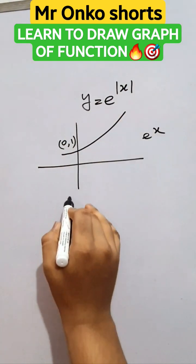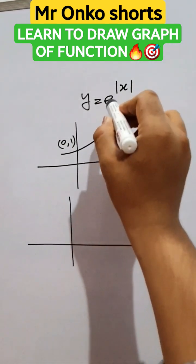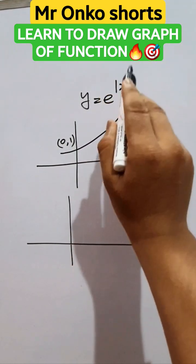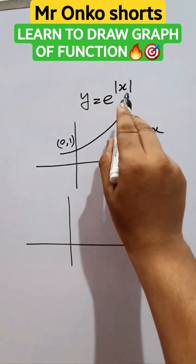Now, if we want to draw the graph of e to the power mod x, then mod x means the value of x is going to be positive.